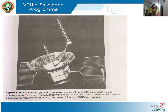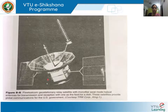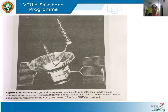This is the Fleet Satcom geostationary relay satellite, which has monofillar axial mode helical antennas used for both transmission and reception. For reception, one is used as a feed for a dish — this is your end-fire dish. These satellites provide global communications for the US government. You can see these helical antennas, both for transmission and reception, with one used as a feed for the dish antenna.